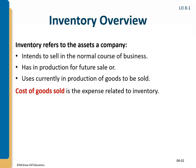Inventory refers to the assets a company intends to sell in their normal course of business — that's how they make profit — or items in production for future sale, or goods currently in production to be sold. Inventory is an asset, and cost of goods sold is the expense we use when we sell goods. We always move the cost of goods out of inventory when they're sold and into the expense cost of goods sold.